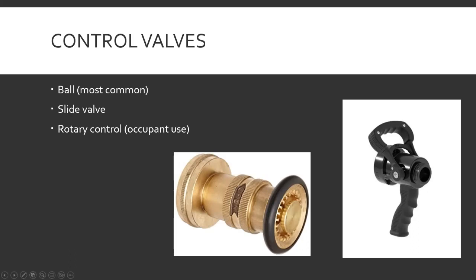Slide valves work differently — there's a little cone and a little sleeve. When the nozzle's closed, that sleeve is pressed up against the cone and water can't get through. But when you open the valve, the little sleeve slides backwards and water can get past the sleeve and around the cone and out the nozzle.